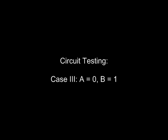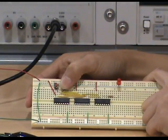In case number 3, we test A is 0 and B is 1. We press the other switch instead. The LED is also turned on. So so far, everything works very well based on the truth table.